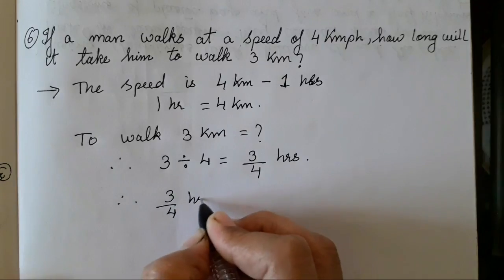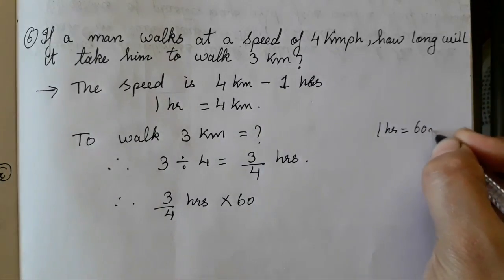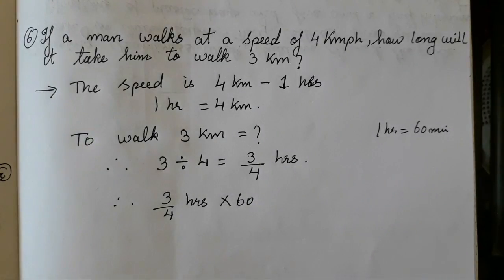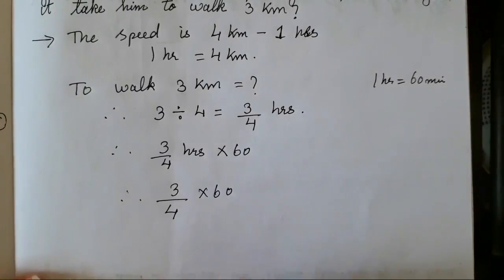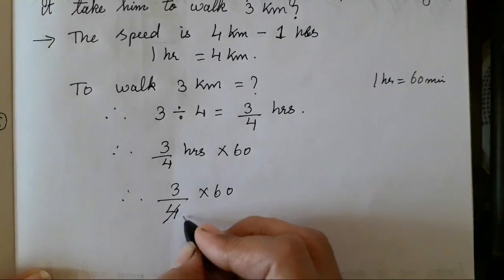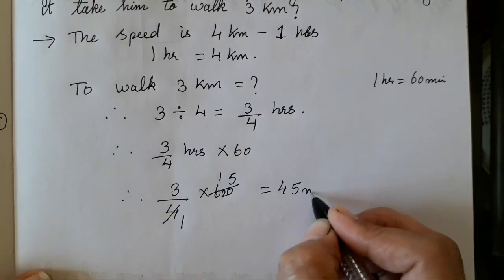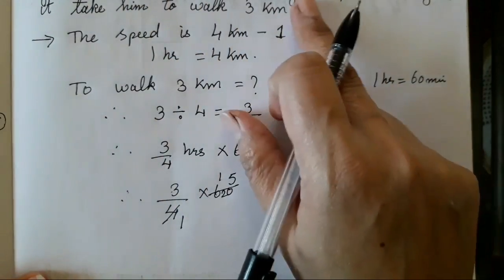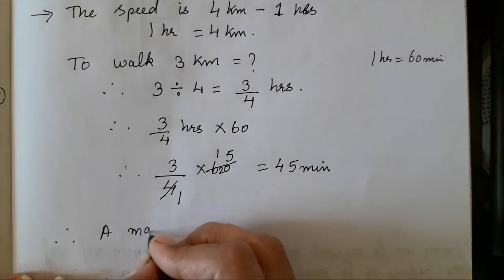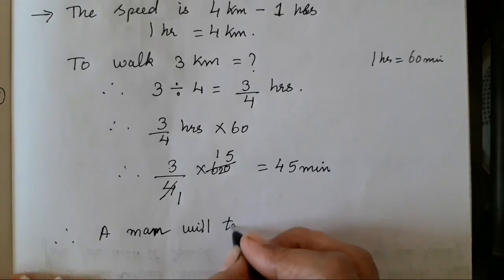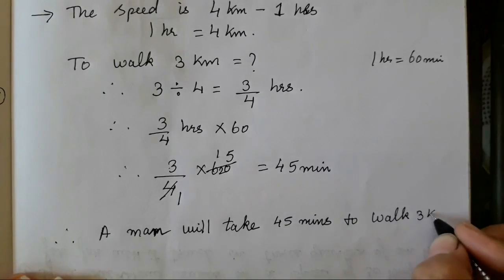Three-fourths of an hour multiplied by 60 — because 1 hour equals 60 minutes. So three-fourths multiplied by 60: divide 60 by 4 to get 15, then 3 multiplied by 15 is 45 minutes. Therefore, a man will take 45 minutes to walk 3 kilometres.